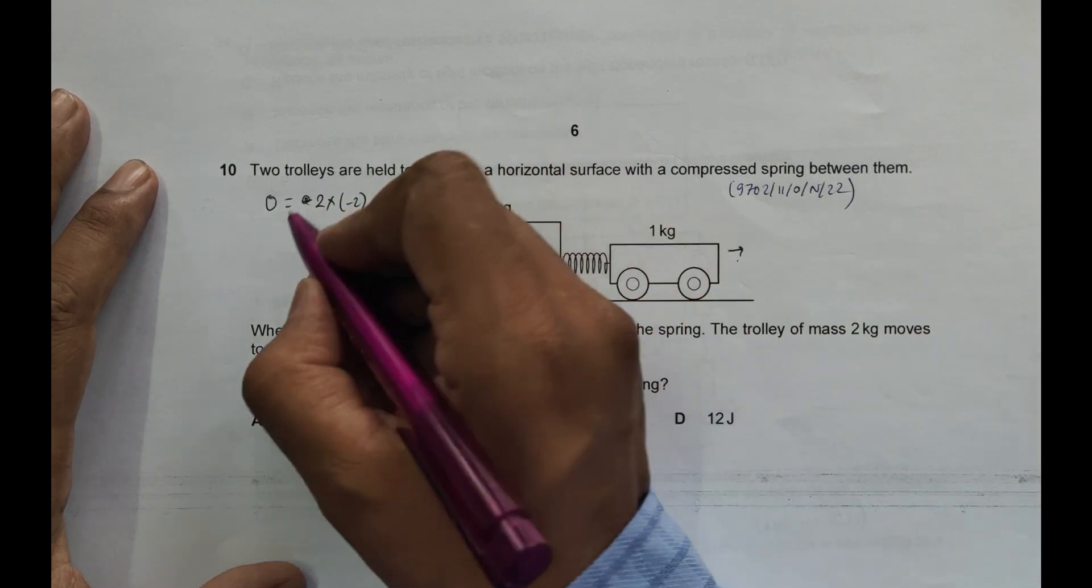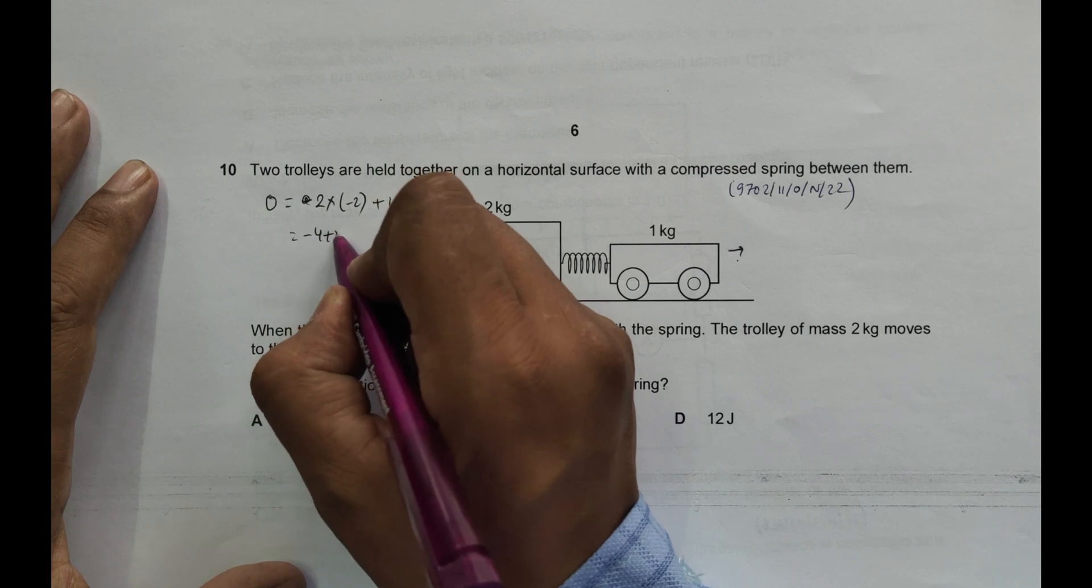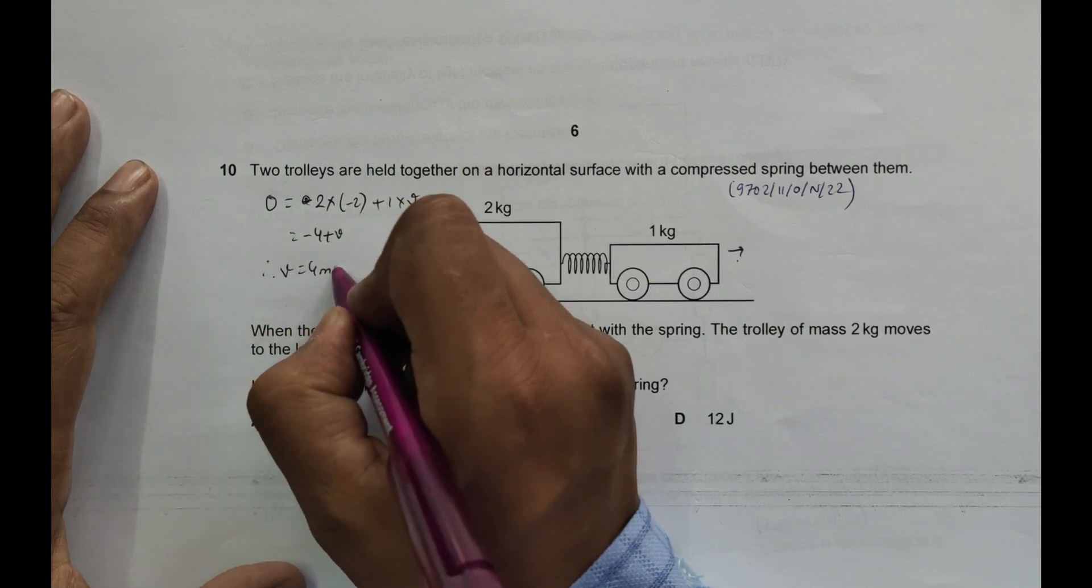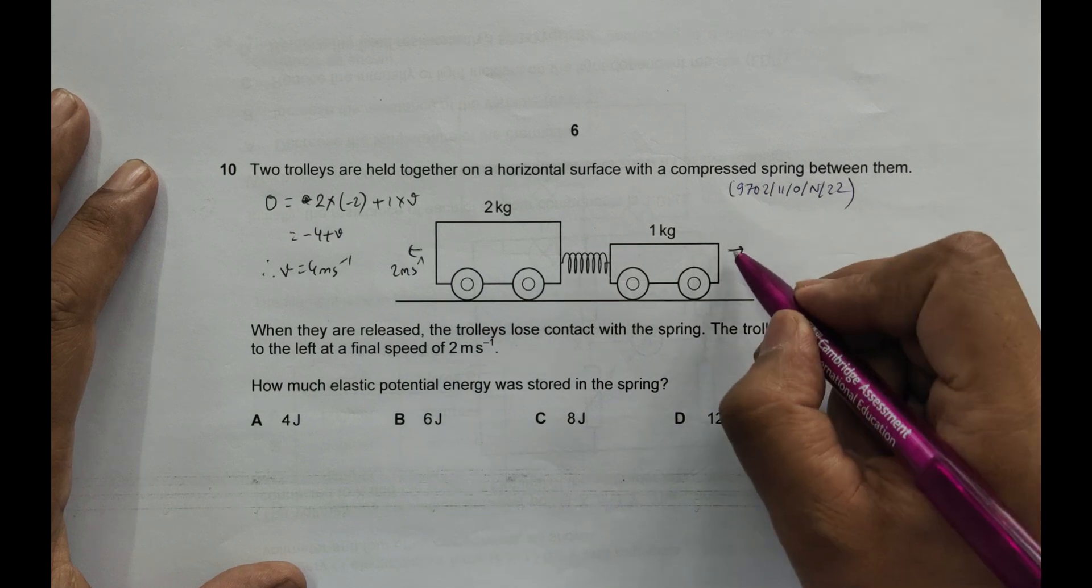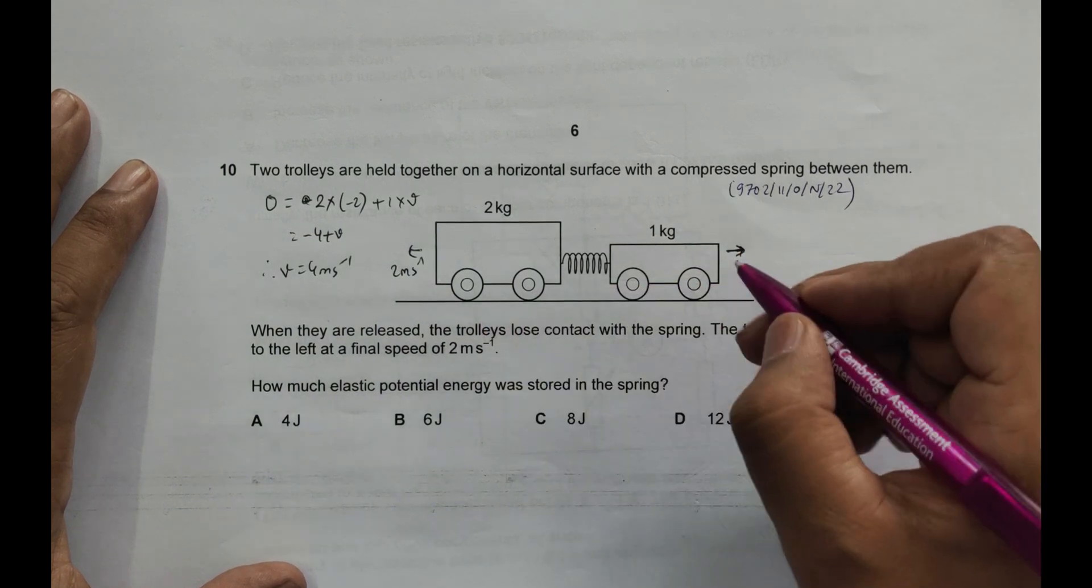This gives us V equal to 4 meters per second. So that means the trolley is moving in the right direction with velocity V equal to 4 meters per second.